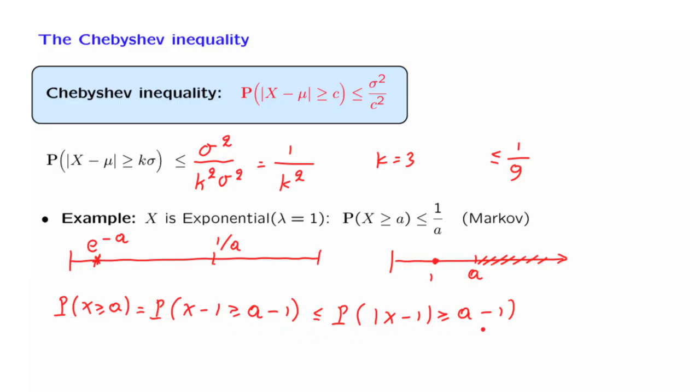And now we can apply the Chebyshev inequality. Here we have the distance of x from the mean. So the Chebyshev inequality applied to the random variable x will have up here the variance of x, which is equal to 1. And in the denominator, we will have a minus 1 squared.